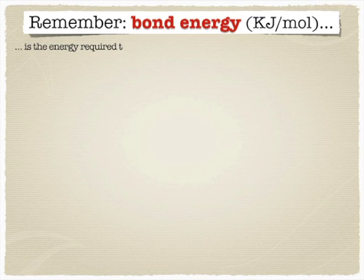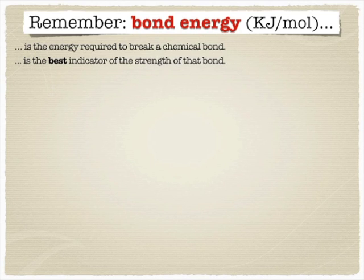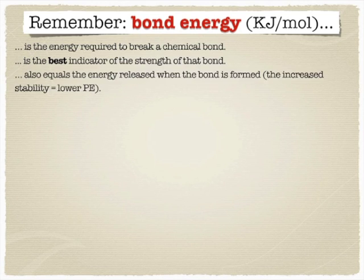We should probably review a little bit about chemical bonds. Bond energy is usually measured in kilojoules per mole — that's how much energy it takes to break a typical bond, or the energy that's released when that bond is formed. It's a very good indicator of the strength of a bond. Most bonds are formed in an exothermic reaction, where the products are more stable than the reactants.